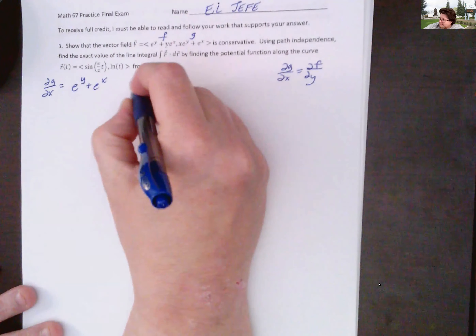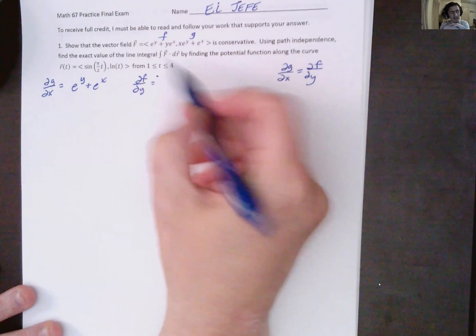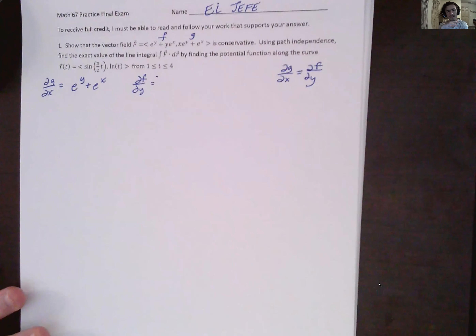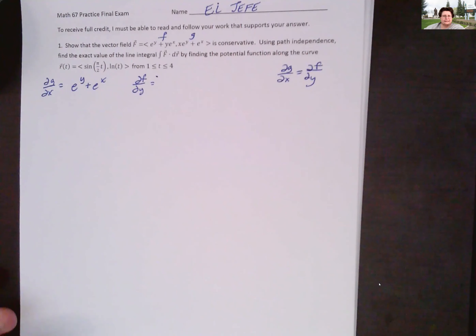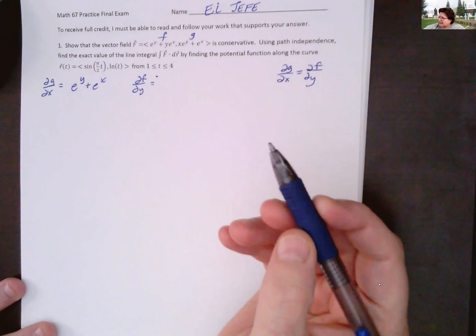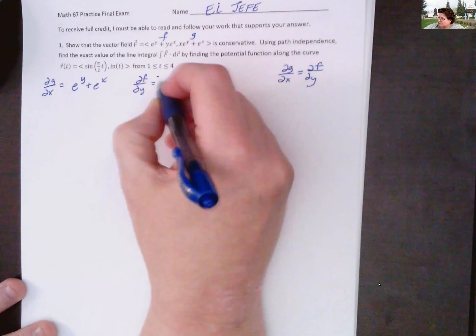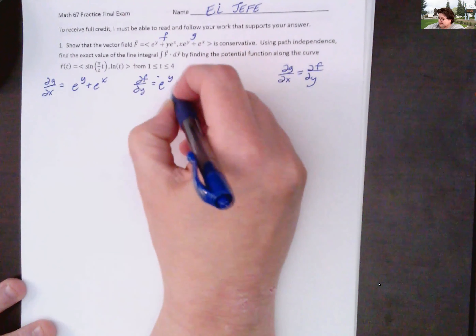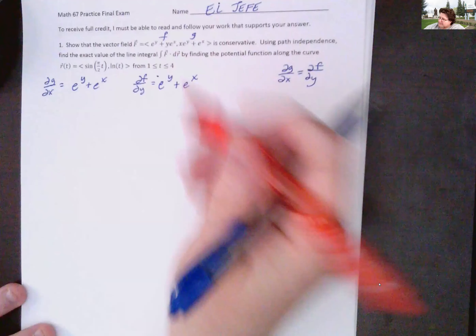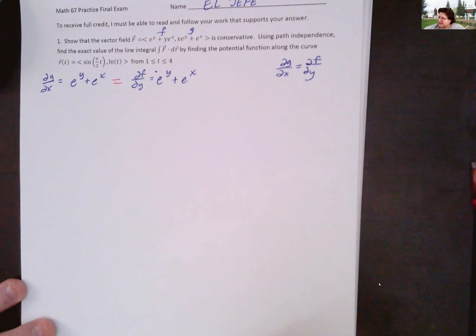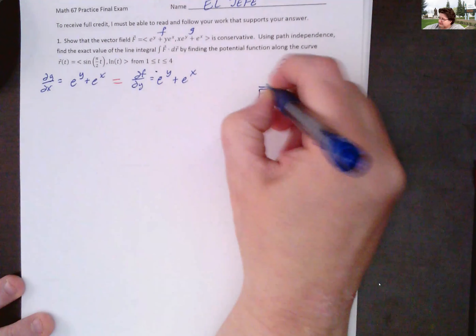And then df/dy — does it matter which way you do it? It very much matters. Because if you look at the equation you might think you can subtract either side, but we'll look at it in a second. For df/dy: e^y derivative is e^y, and the derivative of y·e^x with respect to y is just e^x. These two do equal each other, so we are good to go.